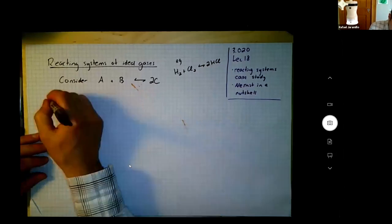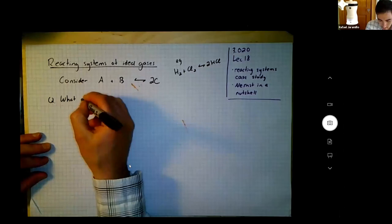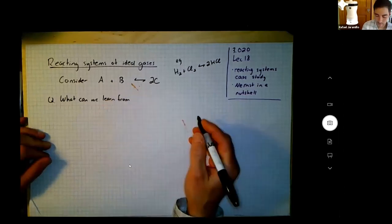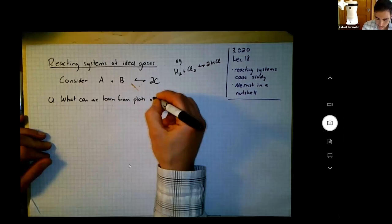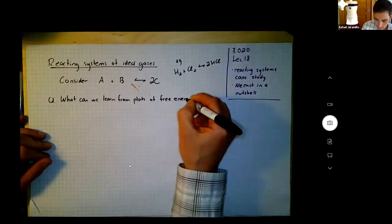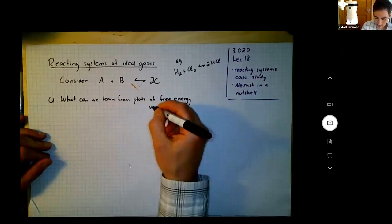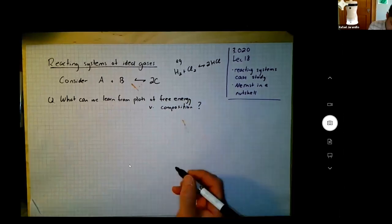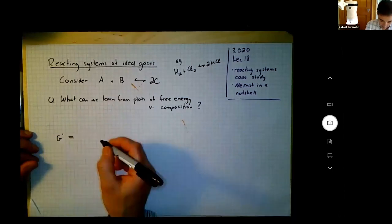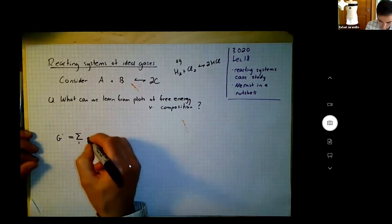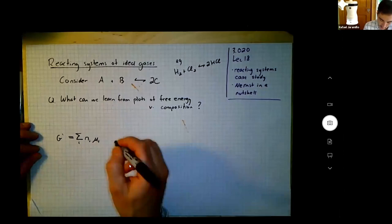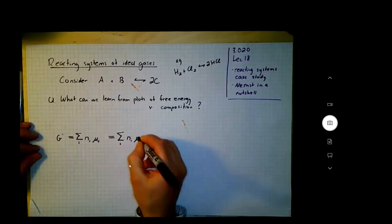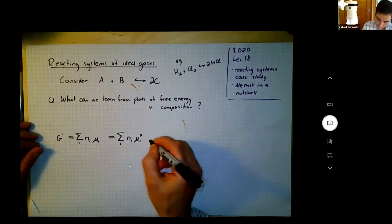Here's what we're going to do. We're going to ask: what can we learn from a plot of free energy versus composition? Free energy is the sum of partial molar free energy weighted by the moles. We know that we decompose this into the sum of the contributions of the pure components before they were mixed, and then we have this ideal solution model.